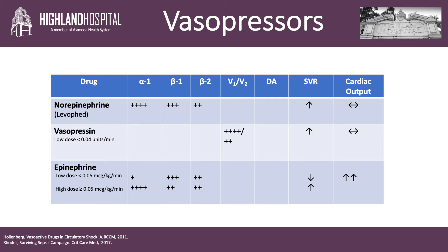Epinephrine has a profile based upon the dose. At low doses, you will see stimulation of beta-1 and beta-2 predominantly, with increases in heart rate and cardiac contractility. There is minimal effect on vascular resistance at low doses of epinephrine. As the dose escalates, there's an increase in vascular resistance as we stimulate more alpha-1 receptors. The overall physiologic response will be dependent upon preload and resultant afterload.